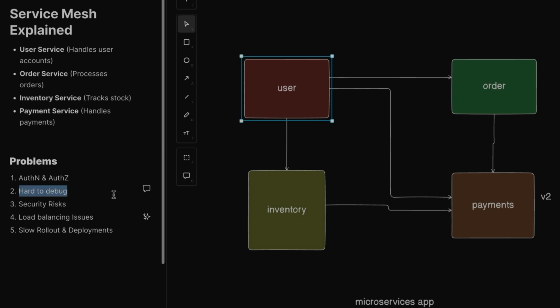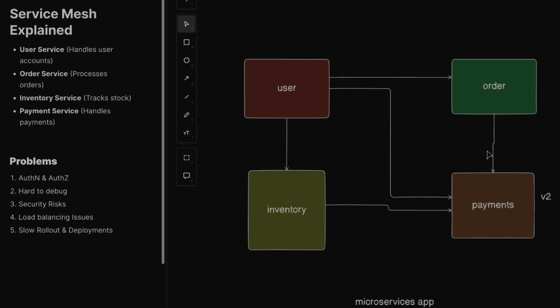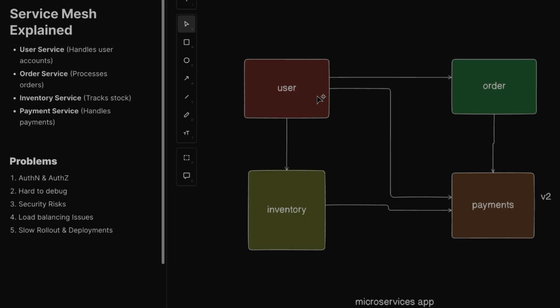The second problem is that it's hard to debug. Whenever there's a problem it's very difficult to troubleshoot. For example, customers complaining that orders are failing randomly — you look into the logs and find the problem is with the payments service, but you don't know if it's due to a network glitch, load spikes, or a faulty service update. The third problem is security risk: services communicate but the data they share is not encrypted, so credit card details could be exposed.